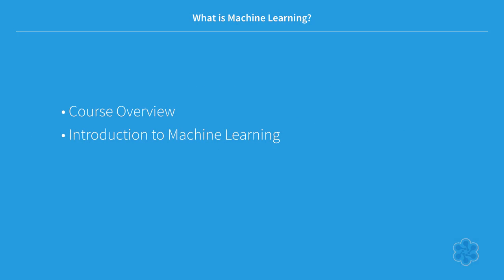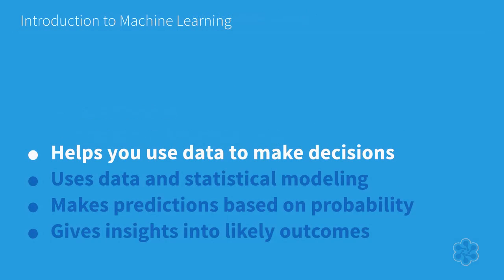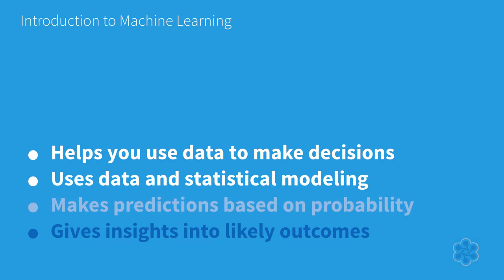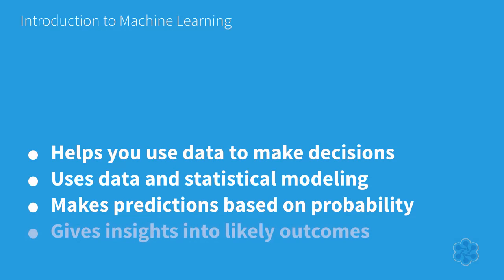So what is machine learning? Machine learning helps you to use historical data to make better business decisions. ML algorithms discover patterns in data and construct a mathematical model based on these discoveries. This model can be used to make predictions based on probability. Machine learning lets you make your decisions based on what is likely to happen, not on what has already happened.